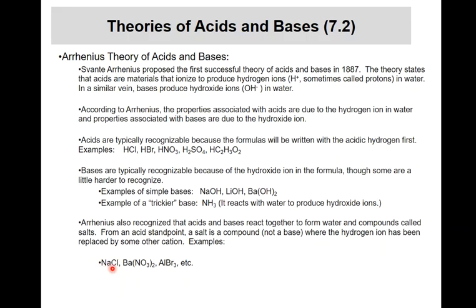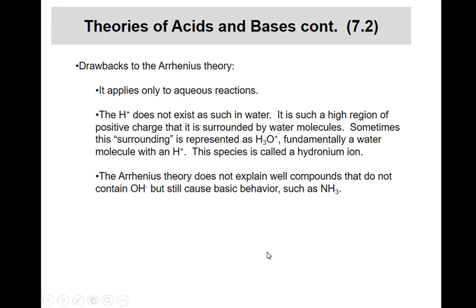Arrhenius also recognized acids and bases react together to make compounds called salts. So here's sodium chloride, that's the result of sodium hydroxide and hydrogen chloride reacting together: the base sodium hydroxide, the acid hydrogen chloride. This would be the base barium hydroxide, the acid nitric acid. These are the results of those guys reacting together.